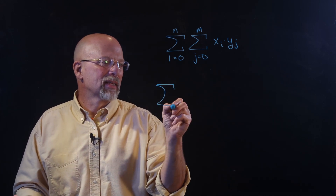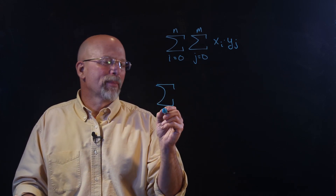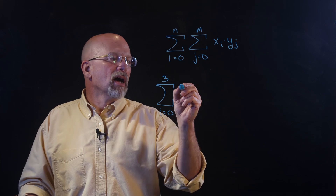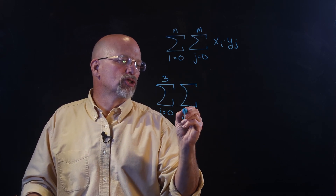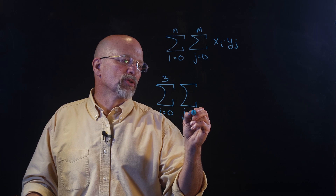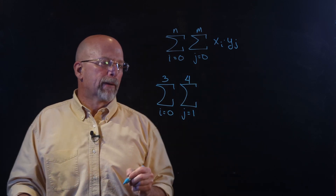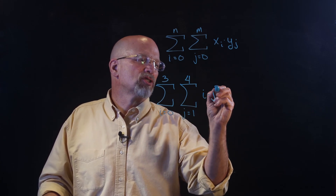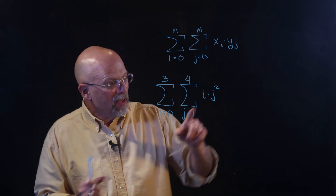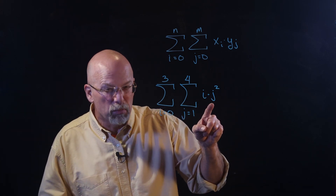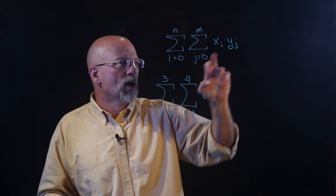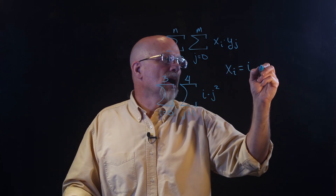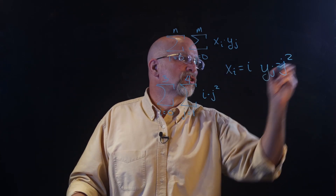Let's say the summation from i equals zero up to three of the summation from j equals one to four of i times j squared. What I've done is given explicit expressions: x sub i is just equal to i, and y sub j is equal to j squared.